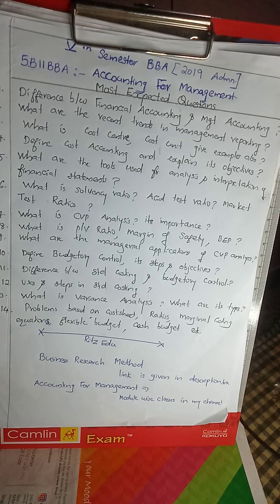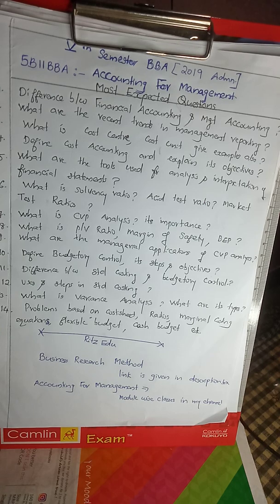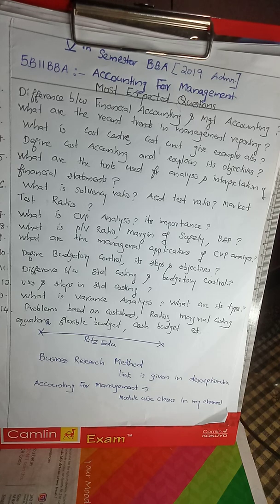The first question is the difference between financial accounting and management accounting. The main point is that financial accounting is a historical type of accounting — it is a post-mortem of past data. Whereas management accounting is a futuristic type of accounting; it provides necessary and timely information to management.